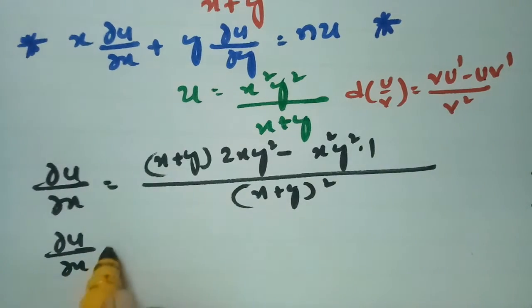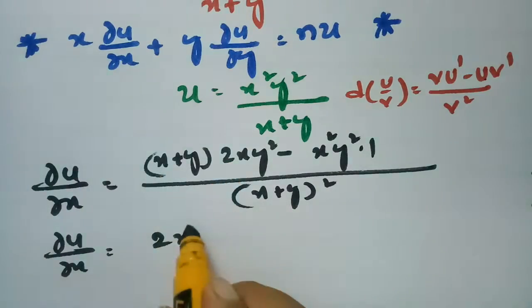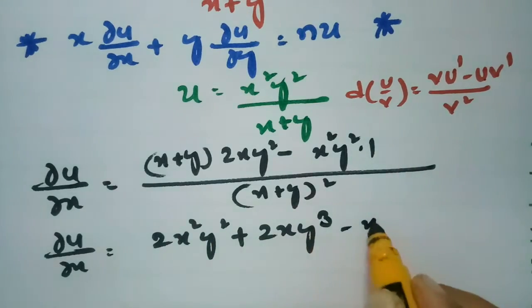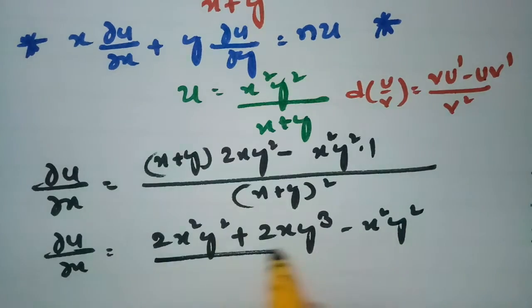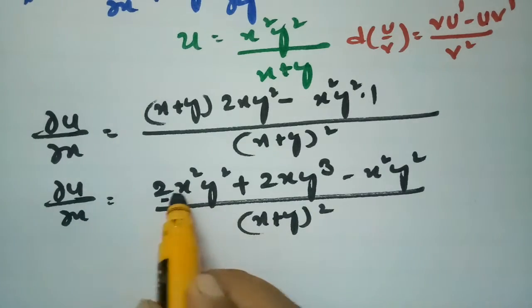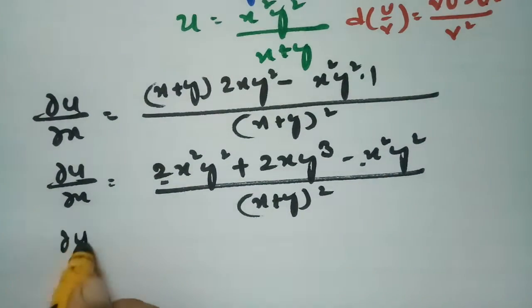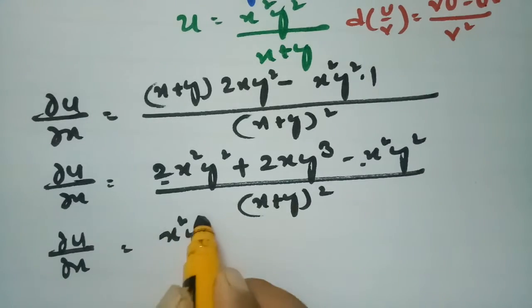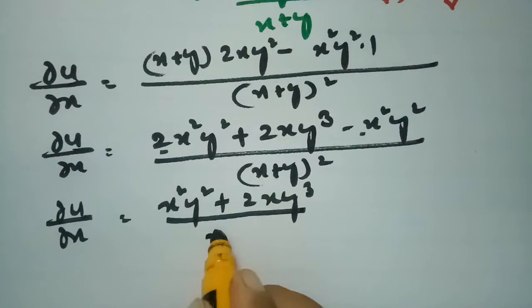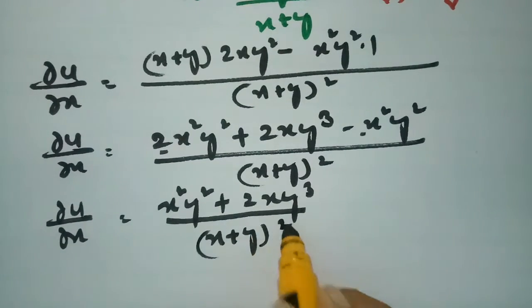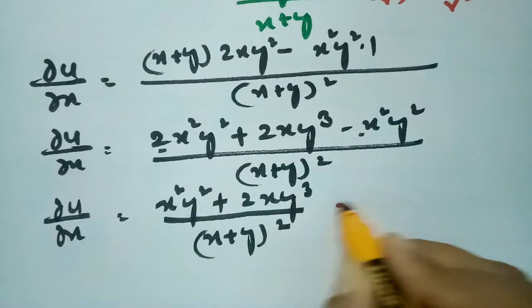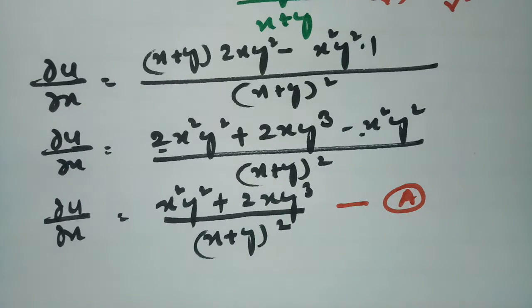Therefore ∂u/∂x value will be: 2x²y² plus 2xy³ minus x²y², all divided by (x+y) whole square. Since 2 minus 1 equals 1, ∂u/∂x equals x²y² plus 2xy³ divided by (x+y) whole square. This is equation number 1.